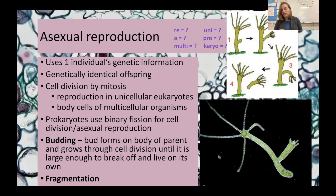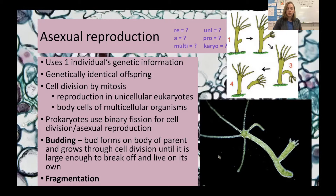Later on, cells began to evolve and develop a nucleus, giving us our first eukaryotic cells. This makes binary fission impossible — we can't just separate the DNA unless that nucleus breaks down. So we have the advent of spindle fibers to pull on those chromosomes, the nucleus breaks down, and we use the process of mitosis.